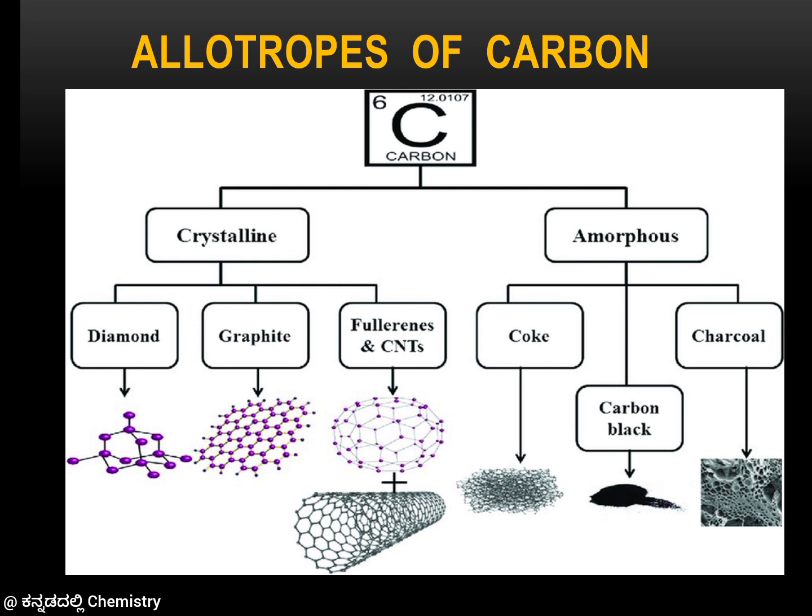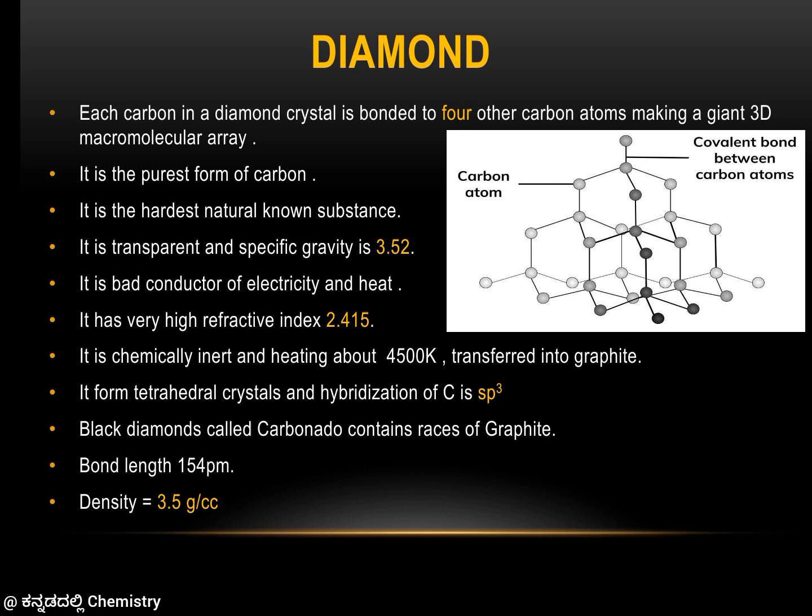The first allotropic form of carbon is diamond. In diamond, each carbon atom is covalently bonded to 4 other carbon atoms, forming a 3D macromolecular array. This is the purest form of carbon and a natural substance.